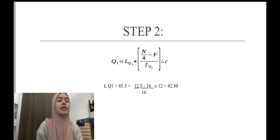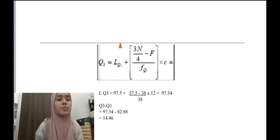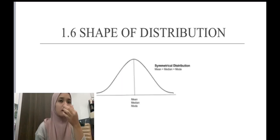After settling step one and step two, Q3 must be subtracted by Q1. So Q3 is 97.34 minus Q1 which is 82.88. The answer is 14.46. The next one is shape of data distribution. I determine the shape of data distribution is right-skewed distribution, meaning mean is higher than median, but median is higher than mode. The picture is the example of the shape of data distribution.